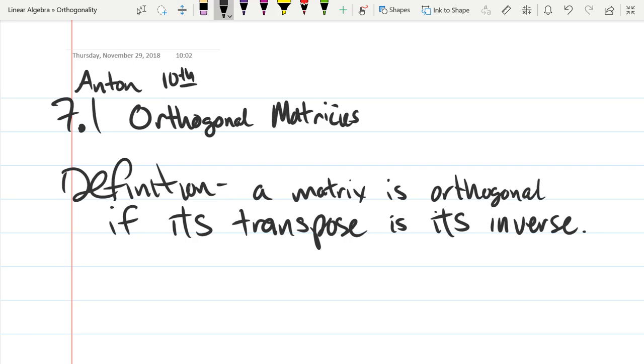So if you know that a matrix has an inverse, what property, what do you know about that matrix? Square. So it has to be square.